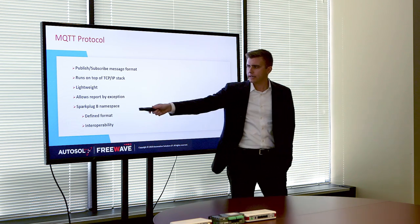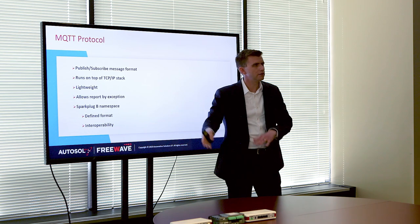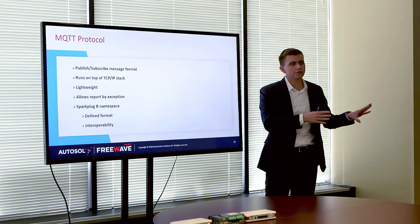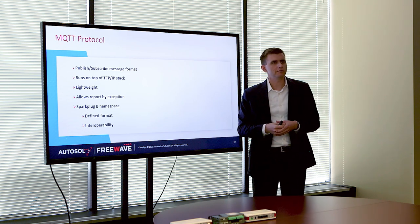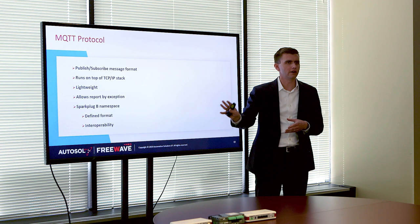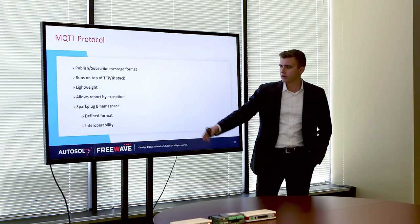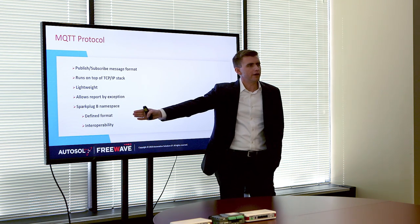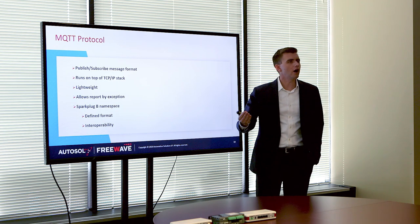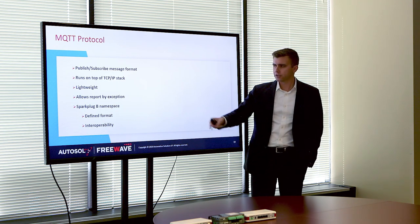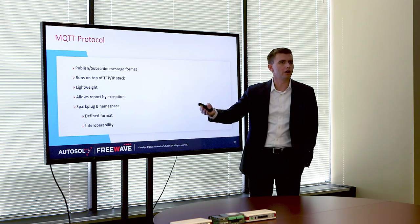MQTT has a namespace called SparkplugB. There's plain MQTT and then there's MQTT SparkplugB — the difference being there is no standard namespace for MQTT. Just because someone has MQTT doesn't mean their JSON message format will work with another piece of software. But if I say I follow the SparkplugB namespace and I want to connect to something like PI which also follows that namespace, we are going to be interoperable out of the box. This standard has really helped the adoption of MQTT into a broader part of our business.